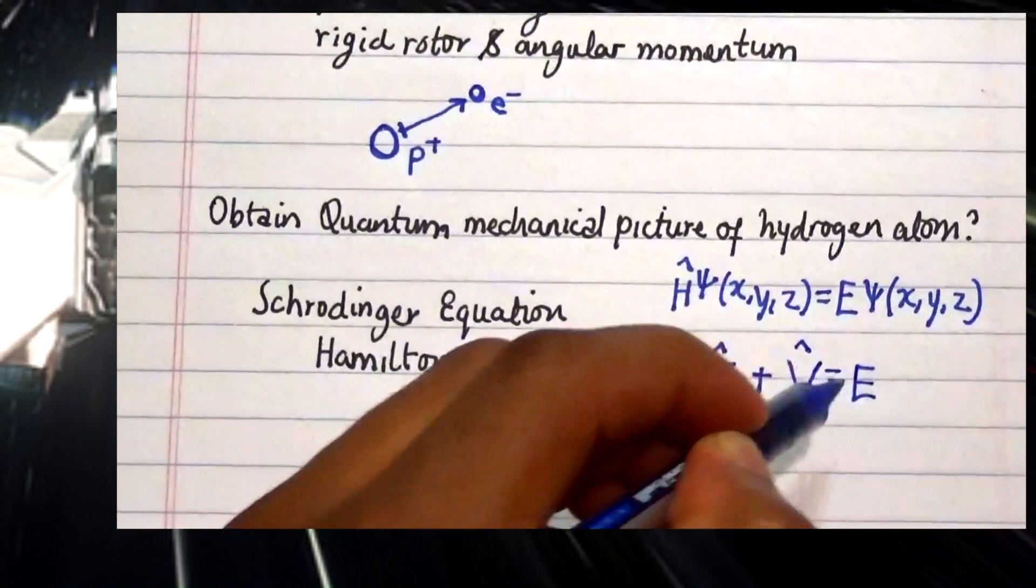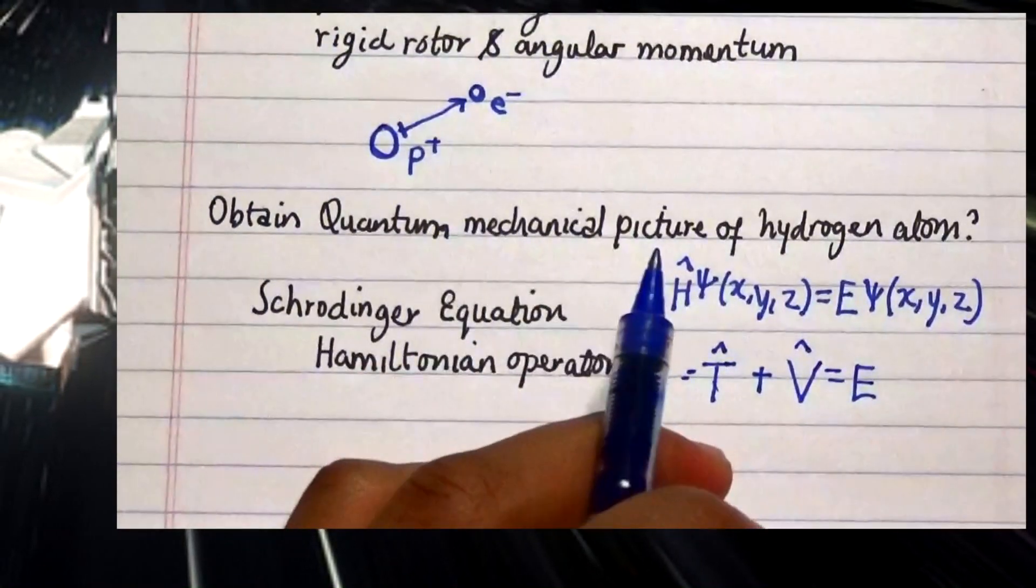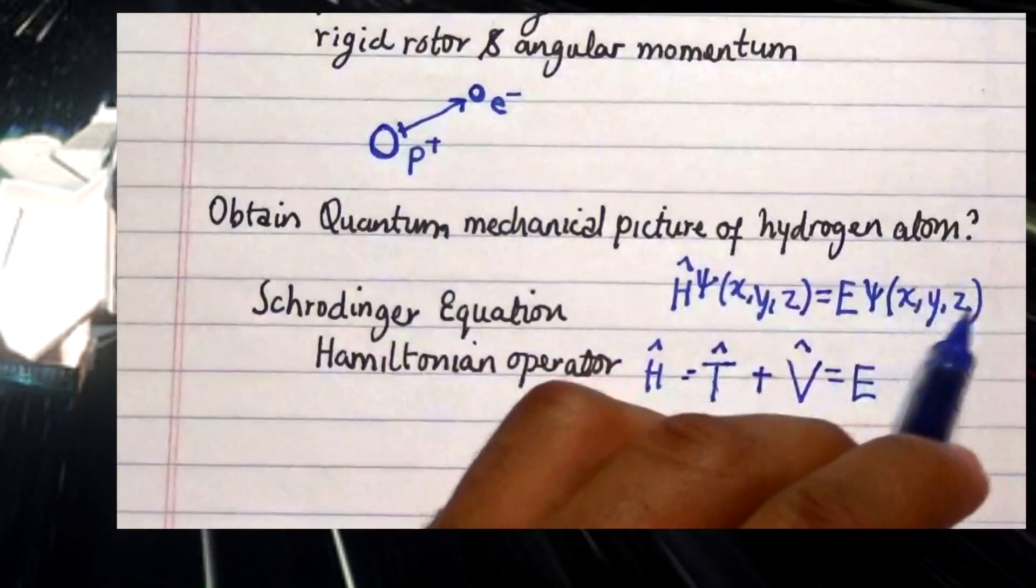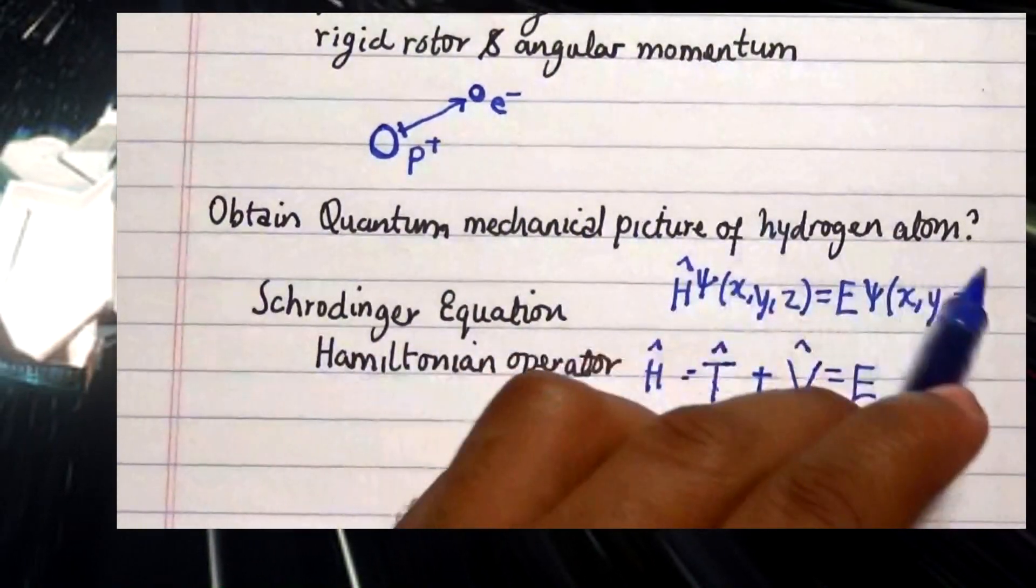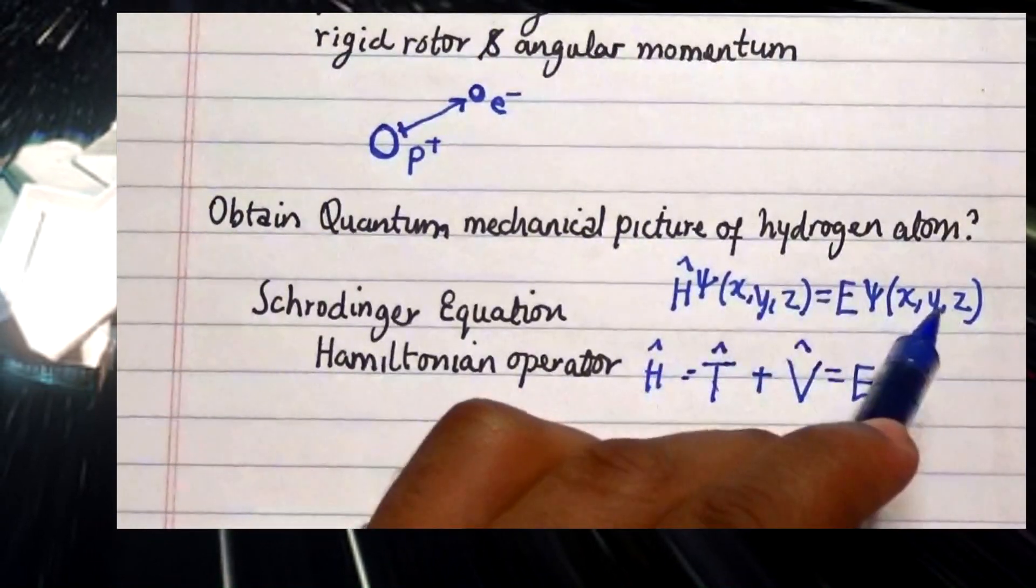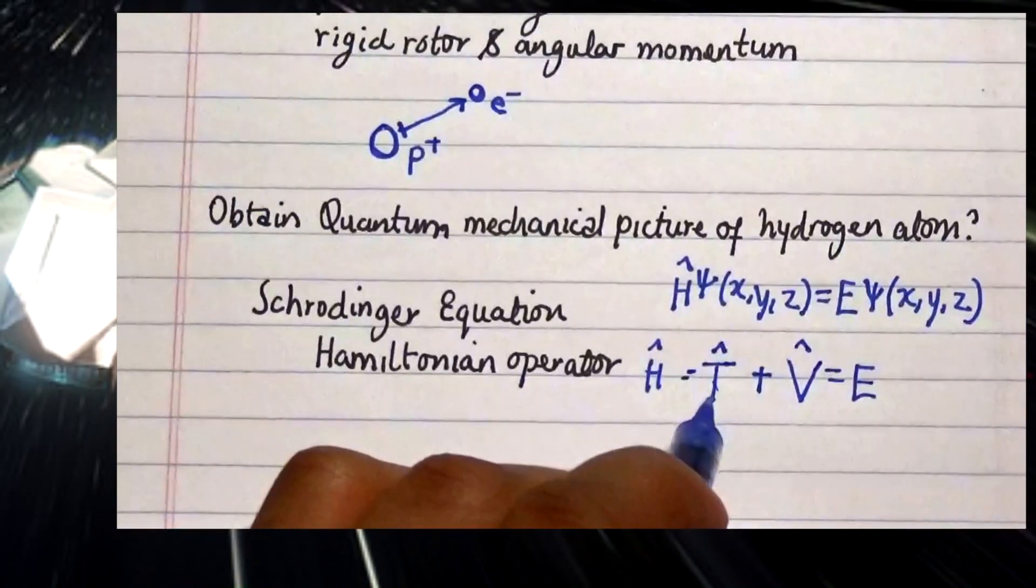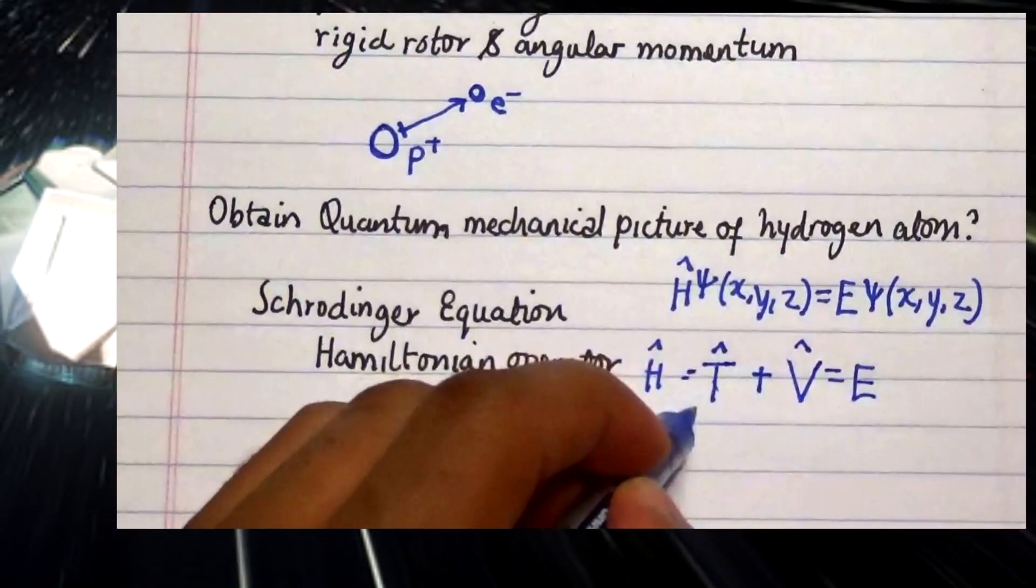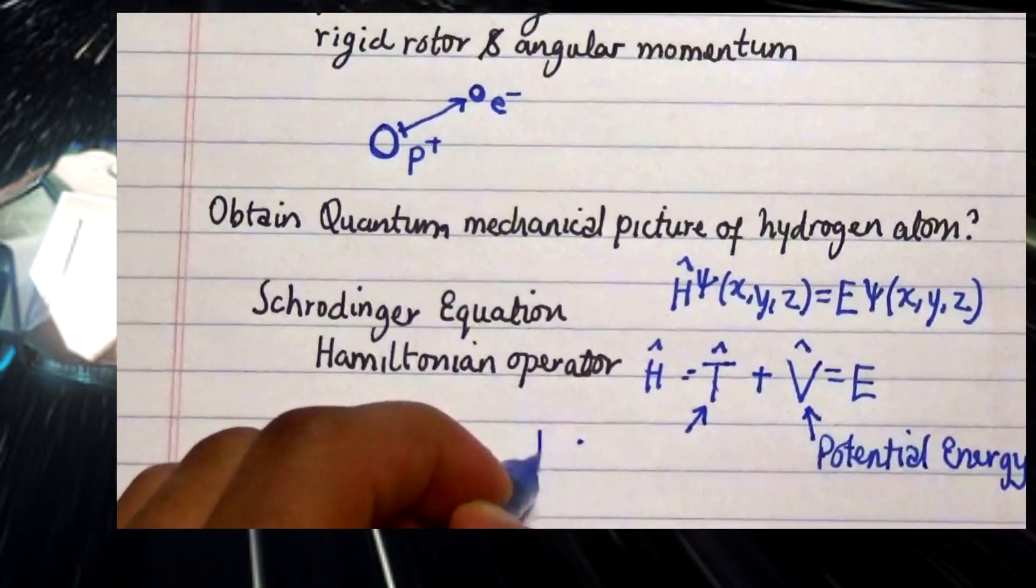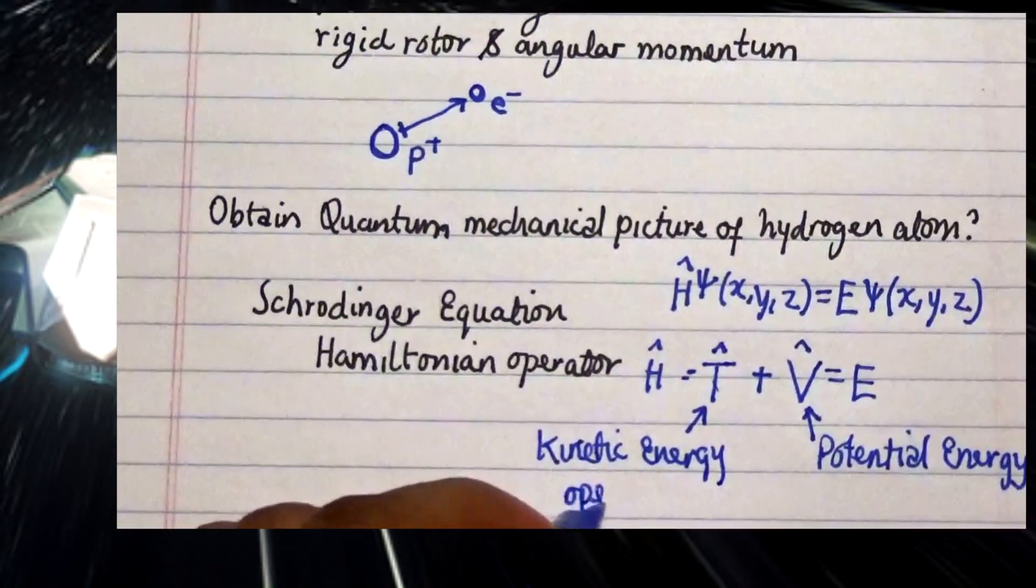We need to take note that the potential energy doesn't actually depend on time. That is the reason why in our Schrödinger's equation we are removing the time coordinates because it is independent of this overall expression as it relates to our potential. This is our potential energy and this is our kinetic energy operator.